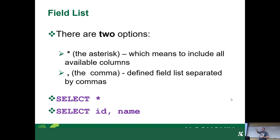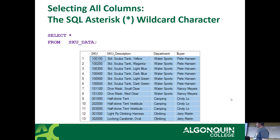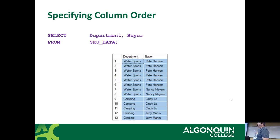SELECT * is great when you're developing and trying to figure out where things are. Once you know where things are, use the comma-delimited list instead. Here's an example: SELECT a series of columns FROM a table called SKU_data. This is a comma-delimited list. If you do SELECT *, this table has about another 10 columns. When it outputs a column-delimited list, it outputs in the order you list them. So you could go SELECT department, buyer or SELECT buyer, department and it would switch the columns in the result.